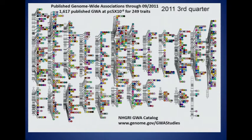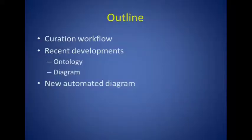Most if not all of you are familiar with this view of the GWAS catalog data that shows the different phenotype associations identified from published GWAS studies. We update this type of diagram every quarter. Today I'll take you behind the scenes and show you a little about our curation workflow, describe some recent developments related to developing an ontology for the GWAS catalog traits, as well as some improvements in our diagram, and finally give you a preview of our new automated diagram.